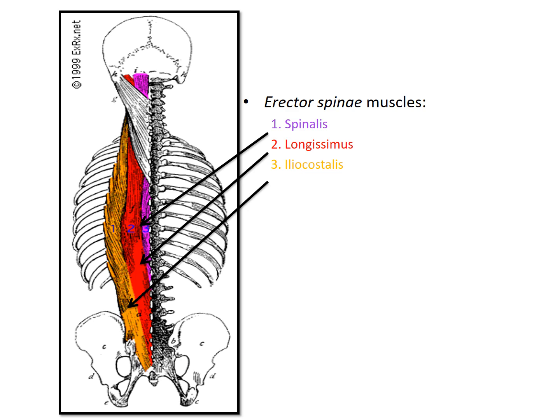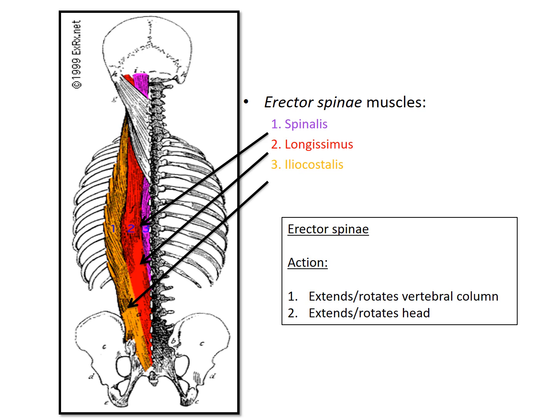Let's look at these erector spinae muscles individually. The erector spinae are made up of three individual muscles: the spinalis muscle shown in purple, the longissimus muscle in red, and the iliocostalis muscle in orange.